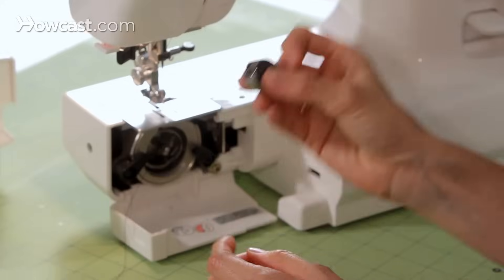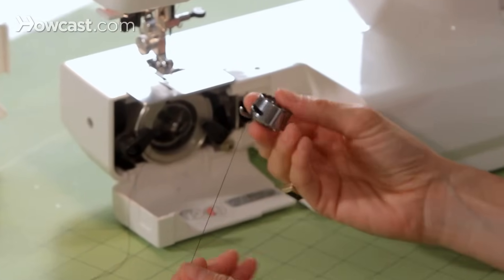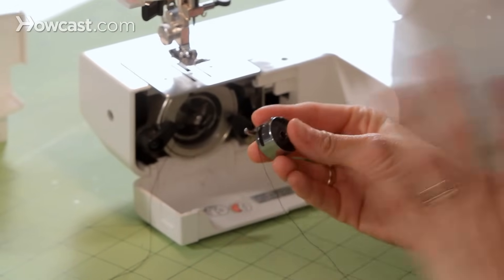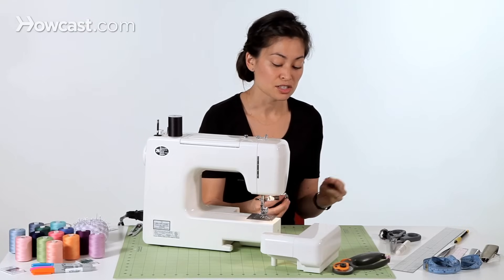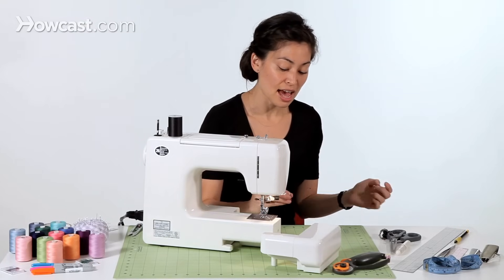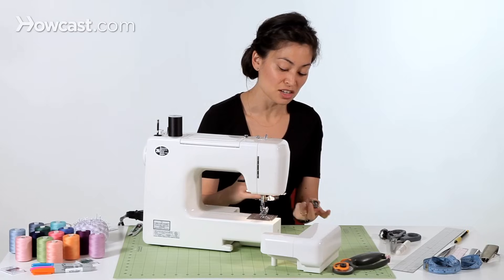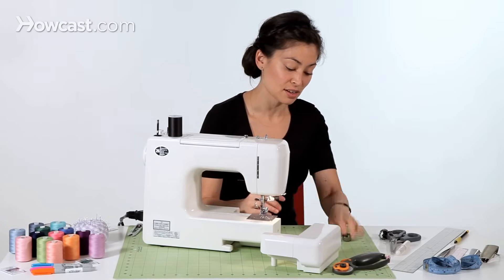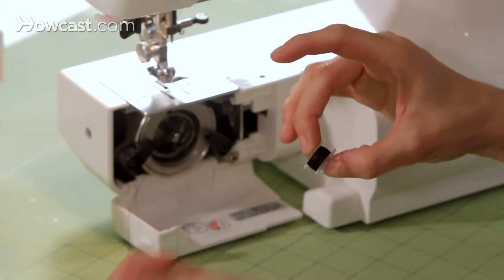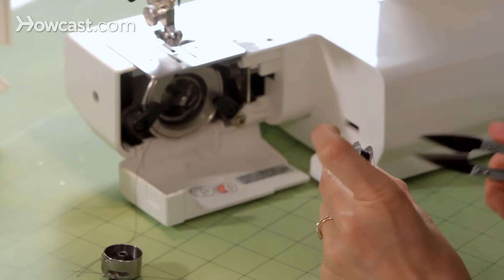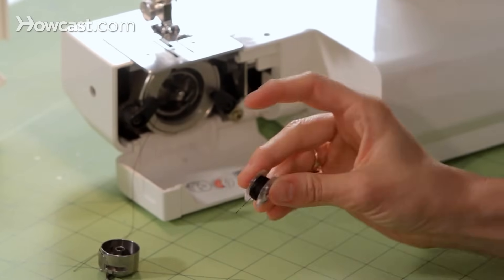I always recommend taking out the bobbin and the bobbin casing, and the first thing you should always do is just re-thread it and start over. You'll take everything out, make sure your thread's not knotted or crazy on your bobbin. You can even pull some of it and cut it so that everything is nice and smooth.